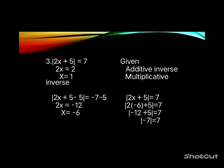Checking: for x equals 1, 2(1) plus 5 equals 7 — verified. For x equals negative 6, 2(negative 6) plus 5 equals negative 7, and the absolute value of negative 7 equals 7 — verified. Now let's check these solutions.